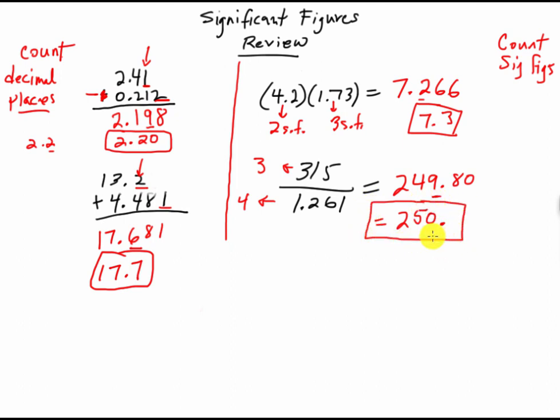So without the decimal, 2 significant figures. Remember, the decimal counts, or the 0s, the trailing 0s count if there's a decimal present. In this case, I put the decimal here, makes that a significant figure. Without the decimal, take the decimal away, it's no longer significant.